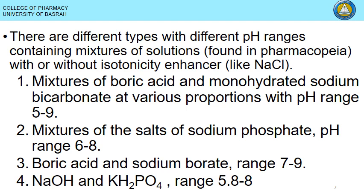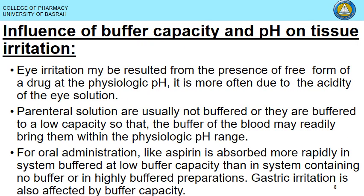Buffer capacity affects tissue irritation. Eye irritation usually results from the free form of the drug at physiological pH, often due to the acidity of the eye solution. For parenteral solutions, the buffer should match human body pH. If it does not, it should be buffered at very low capacity, allowing the blood's own buffer system to restore the pH of the formulation.